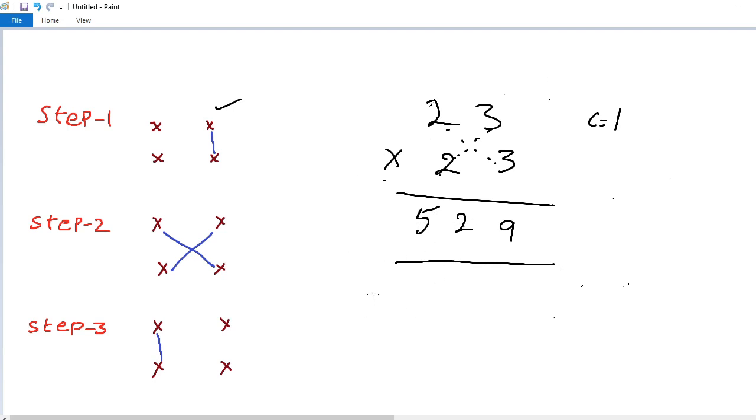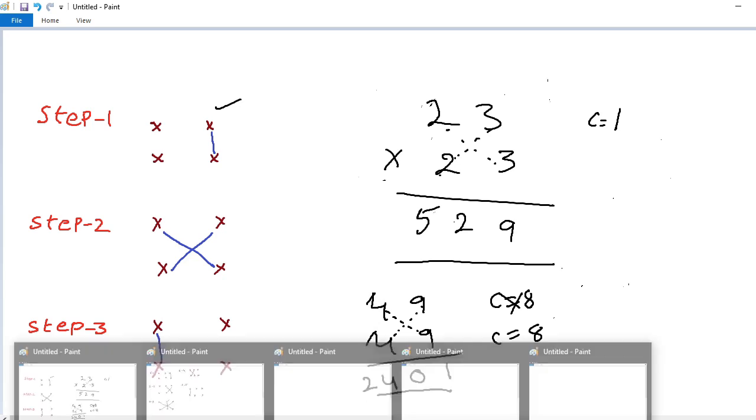So one more example. 49 into 49. First step 9 into 9, 81 carry 8. Next cross multiplication 4 into 9, 36 plus 4 into 9, 36. 36 plus 36, 72 plus carry 8. So 72 plus 8, 80. Again carry 8. Third step multiply these two numbers, tens digit place numbers. 4 into 4, 16. 16 plus 8, 24. Like that you can find 1 to 100 squares within 30 seconds.